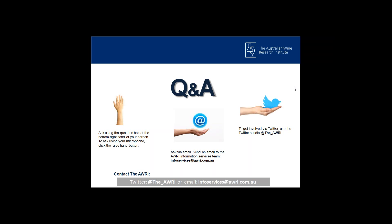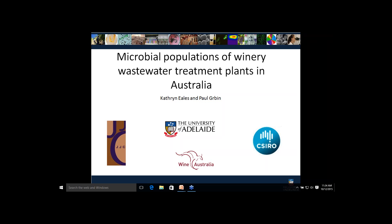Okay, that's enough from me for now. I'm going to hand it over to our presenter to get us started. Thanks Michael. So today I'm going to talk about the microbial populations of winery wastewater treatment plants in Australia. This work is through the University of Adelaide, funded by Wine Australia, and performed in conjunction with JJC Engineering — Mike Carson and John Constable — and Anu Kumar and team at the CSIRO Land and Water.